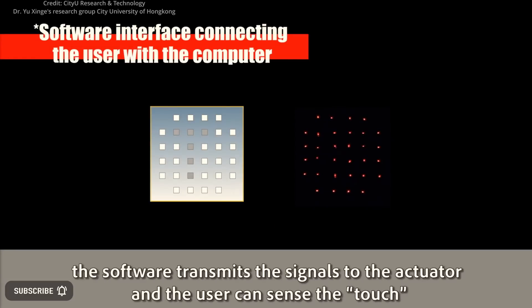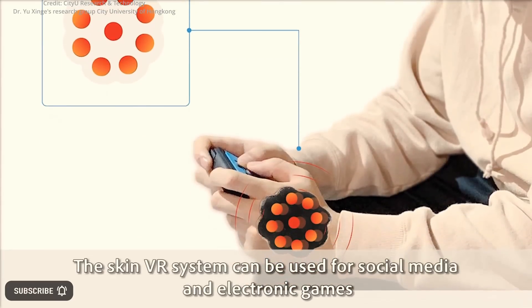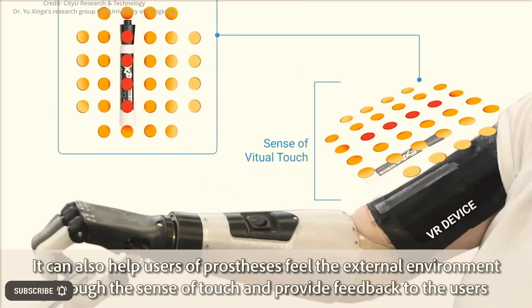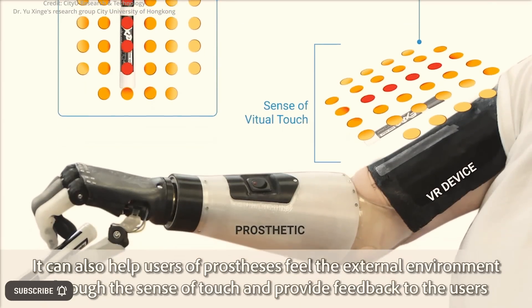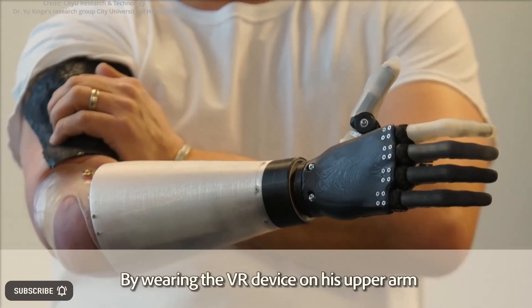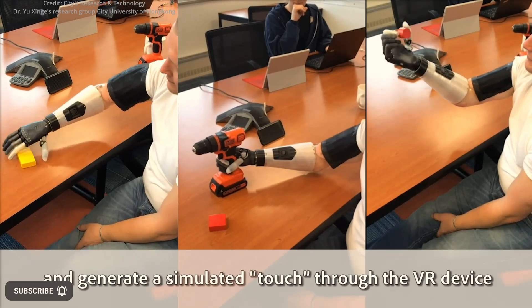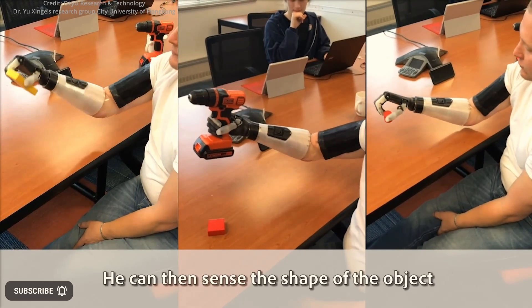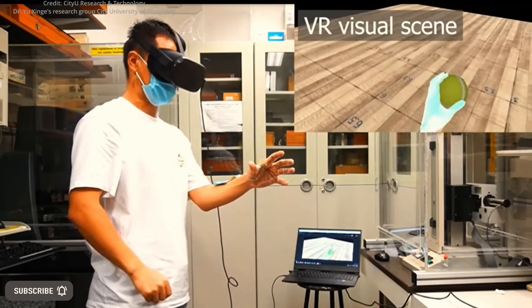The WITAC system has a wide range of potential applications in fields such as gaming, sports and skills training, social activities, and remote robotic controls. It is believed that touch feedback, along with visual and auditory information, can greatly enhance virtual reality experiences.